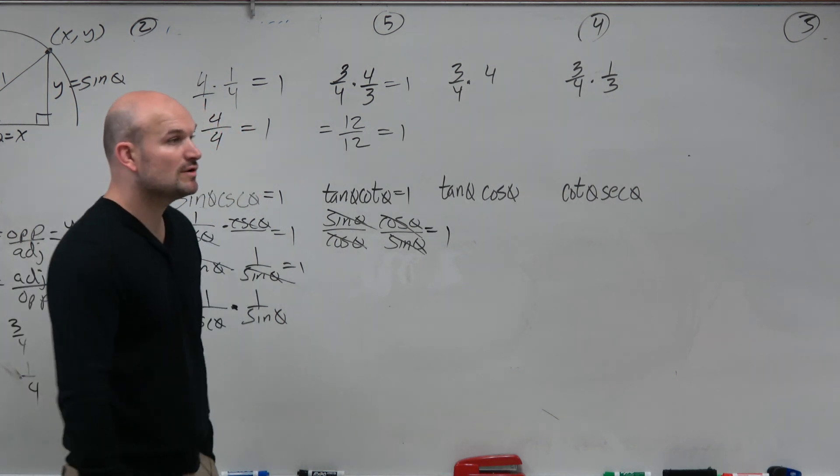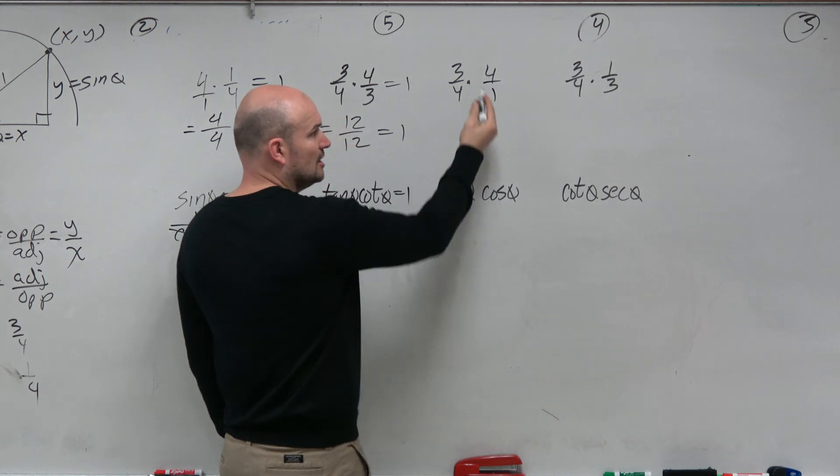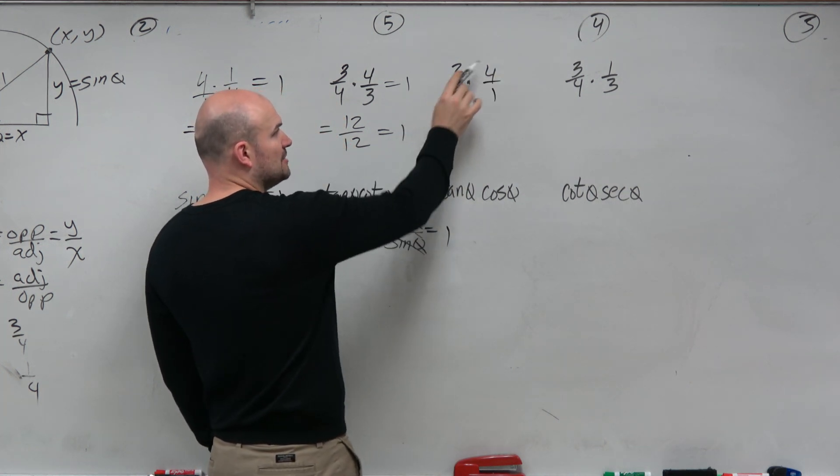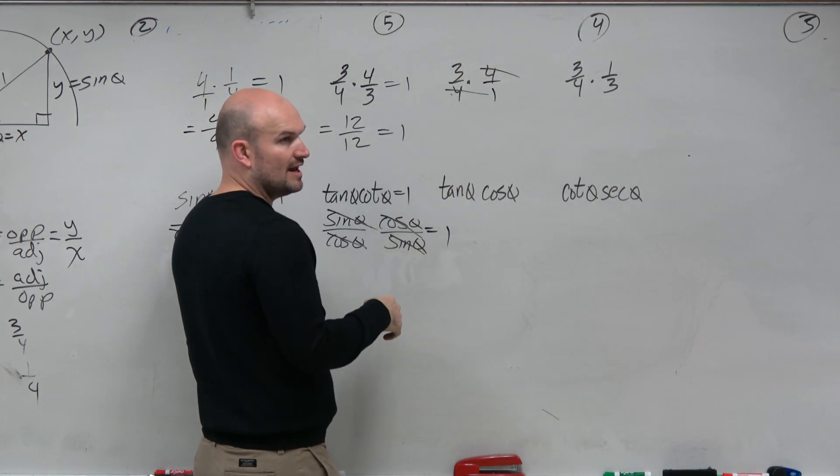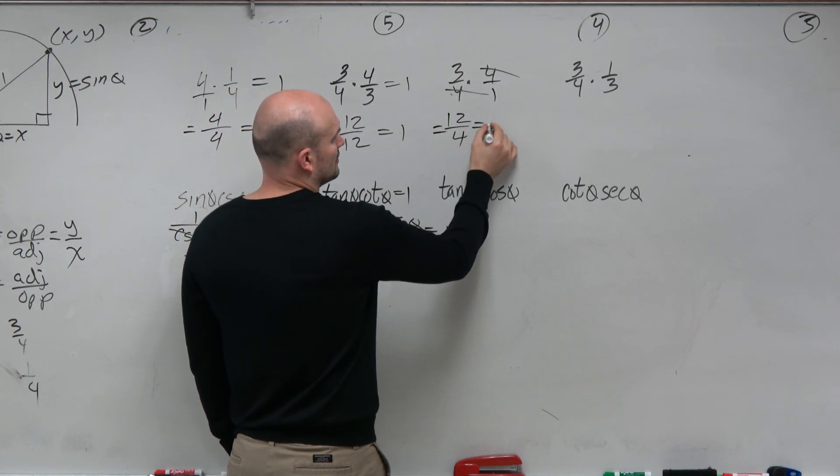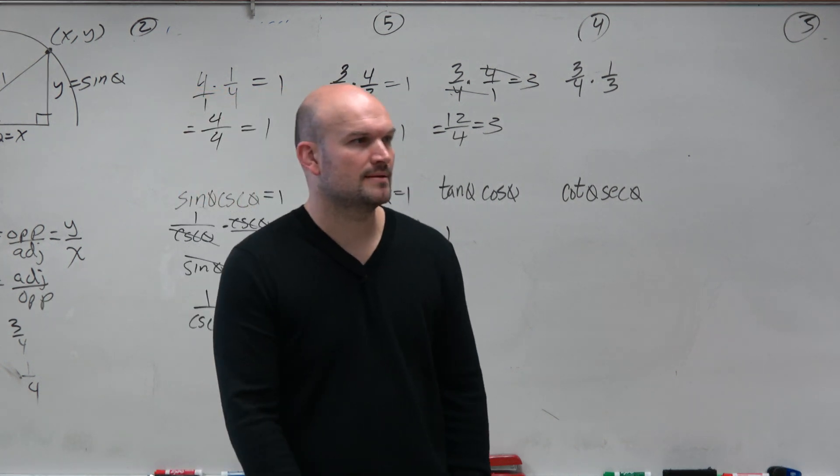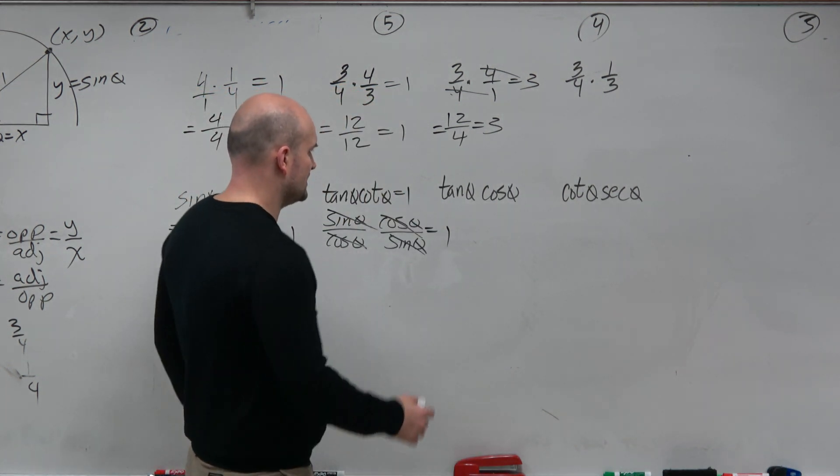The next one, 3 over fourth times 4 over 1. Well, hopefully you guys recognize, when you have something already the same in numerator and denominator, like those divide out. Right? I mean, you could write it as 12 over 4. But you could see that those 4's just divide out.